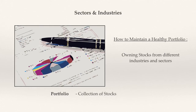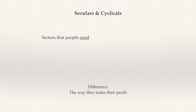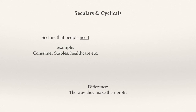Stocks are also divided into two very important categories: seculars and cyclicals. The big difference is in the way that they make their profits, therefore responding to the relative strength or weakness of the economy. Secular stocks make up stocks that people need regardless of the state of the economy — for example, consumer staples such as supermarkets, or healthcare.